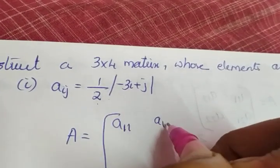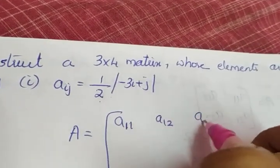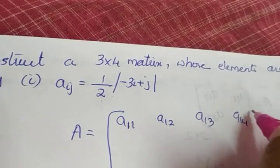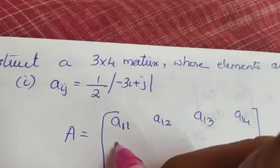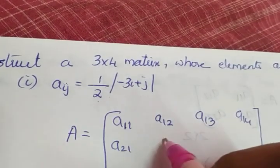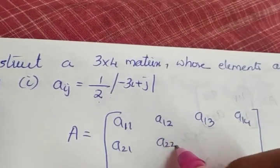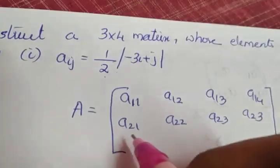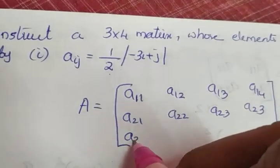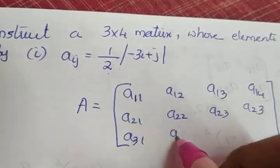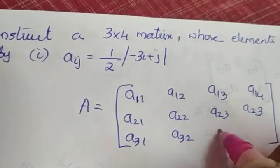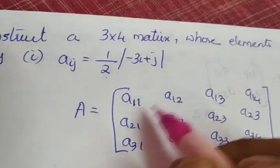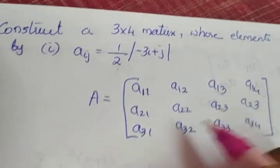The elements are A11, A12, A13, A14 — that completes the first row. A21, A22, A23, and A24 — that is the second row. And A31, A32, A33, and A34. We have to find all these elements.